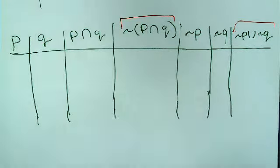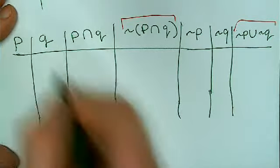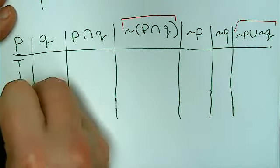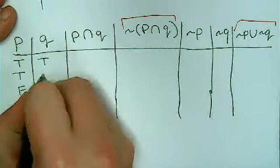So I always start off a truth table the same way. Start over here with my feeder statement, my initial two considerations. And I put in all four possible combinations of true and false: true true, true false, false true, false false.